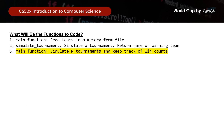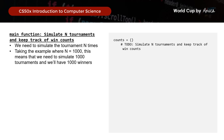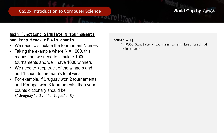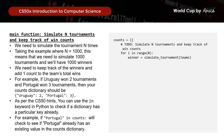Next we work on the last item: simulate n tournaments and keep track of win counts. We simulate the tournament n times — for example where n equals 1000, we get 1000 winners and track each team's total wins. For example, if Uruguay won 2 tournaments and Portugal won 3, the counts dictionary should be {Uruguay: 2, Portugal: 3}. As per the CS50 hints, you can use the 'in' keyword to check if a dictionary already has a particular key. If the team exists in counts, we add 1 to its score; if not, we set its score to 1.